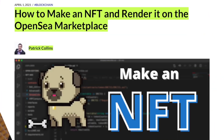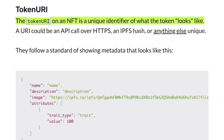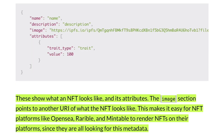There was a nice piece of NFT information put out by Patrick Collins titled "How to make an NFT and render it on the OpenSea marketplace." He said this in the section "What are NFT Metadata and Token URI?": The Token URI on an NFT is a unique identifier of what the token looks like — these show what an NFT looks like and its attributes. The image section points to another URI of what the NFT looks like, making it easy for NFT platforms like OpenSea, Rarible, and Mintable to render NFTs on their platforms, since they are all looking for this metadata.